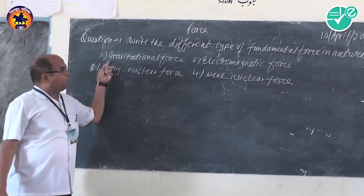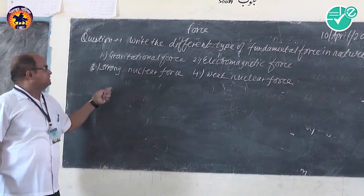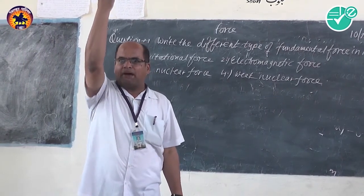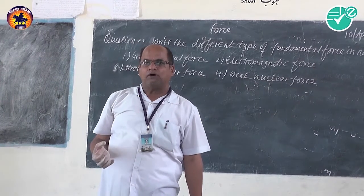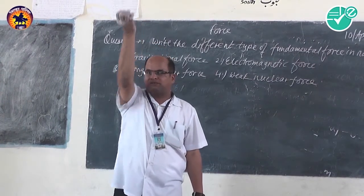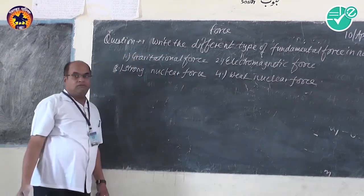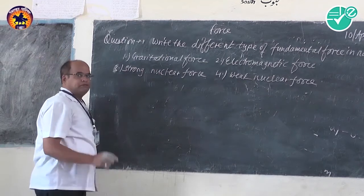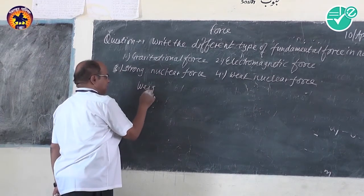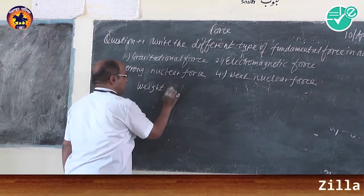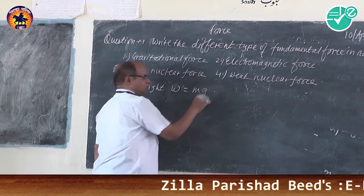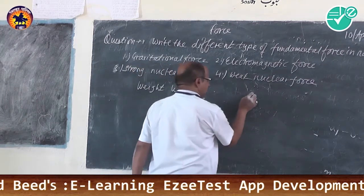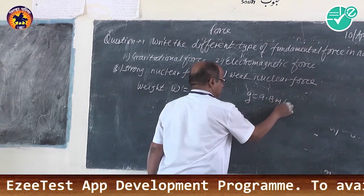These are four types of fundamental forces which exist in nature. First is the gravitational force. Any body when vertically thrown upwards comes back to the earth. This tendency to pull objects towards the centre is called gravitational force, or in other terms it is called the weight of the body. If W is the weight of the body and m is the mass, then weight W is equal to mass m into g, where g is acceleration due to gravity. The value of g is 9.8 m/s².